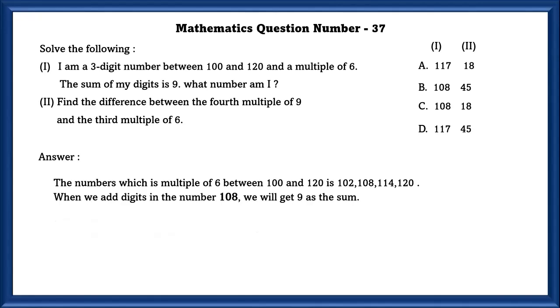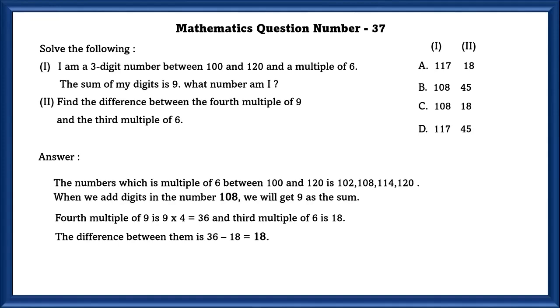Now solving the next one. Find the difference between the fourth multiple of 9 and the third multiple of 6. The fourth multiple of 9 is 36, and the third multiple of 6 is 18. So the difference between both of them is 18. So the C option is the correct option.